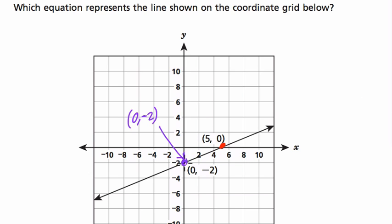That tells me that the slope is going up twice from this point and over 5 times. So up 2, over 5.